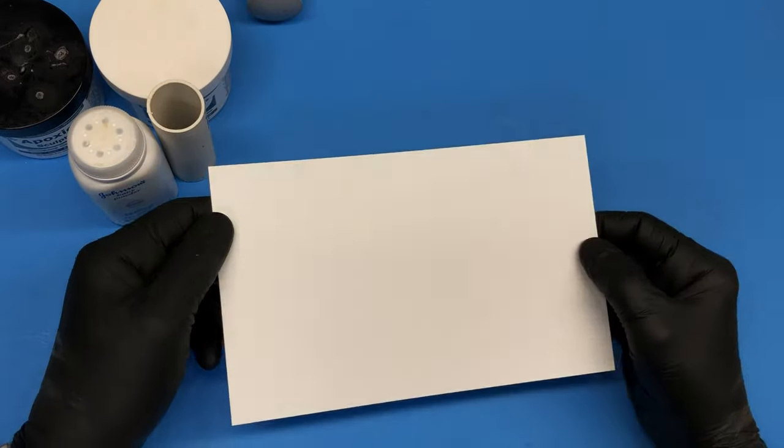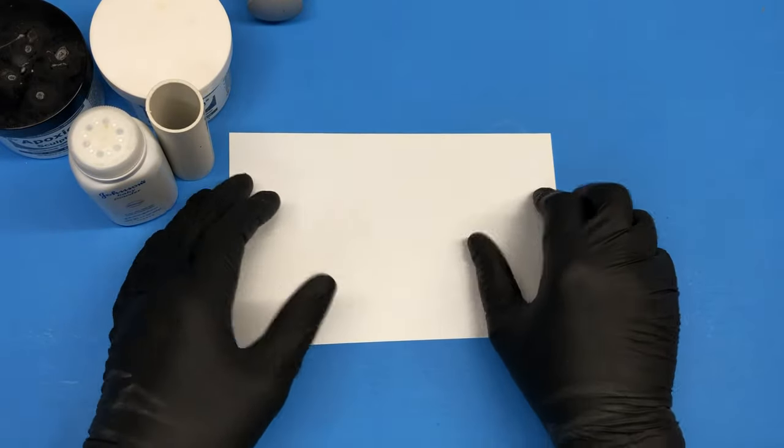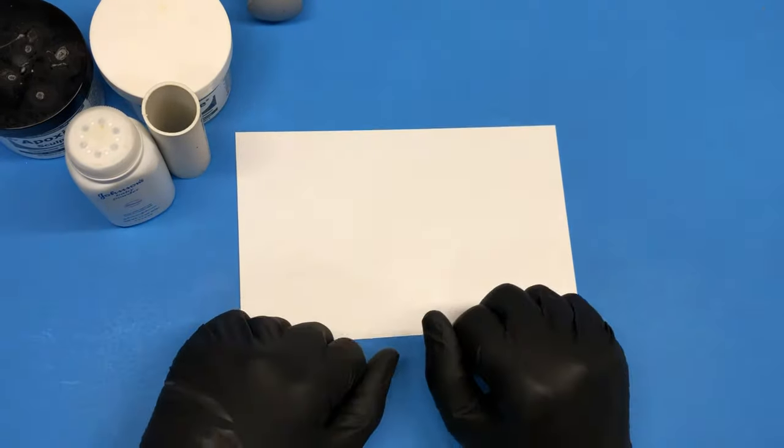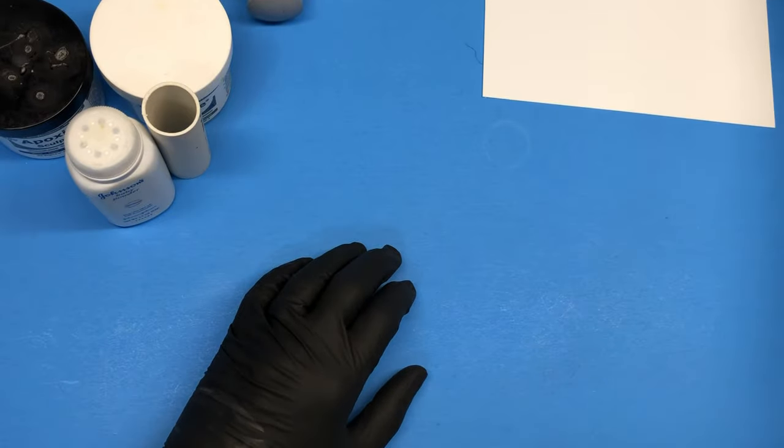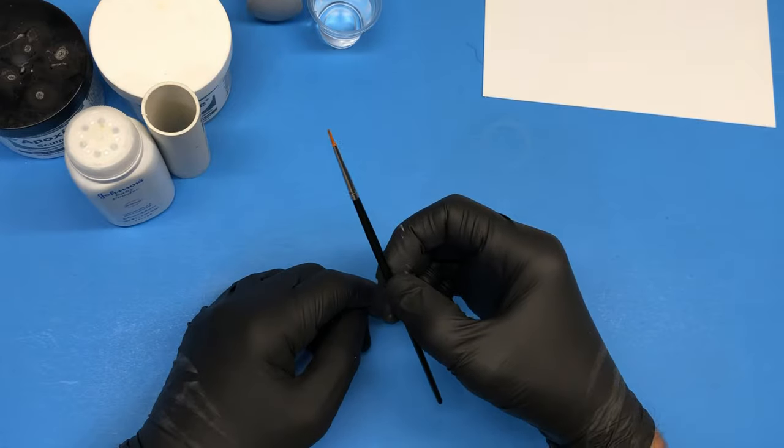A little piece of plastic sheet to work on so the Milliput won't stick to paper or anything. A little cup of water—tap water—and a small brush.